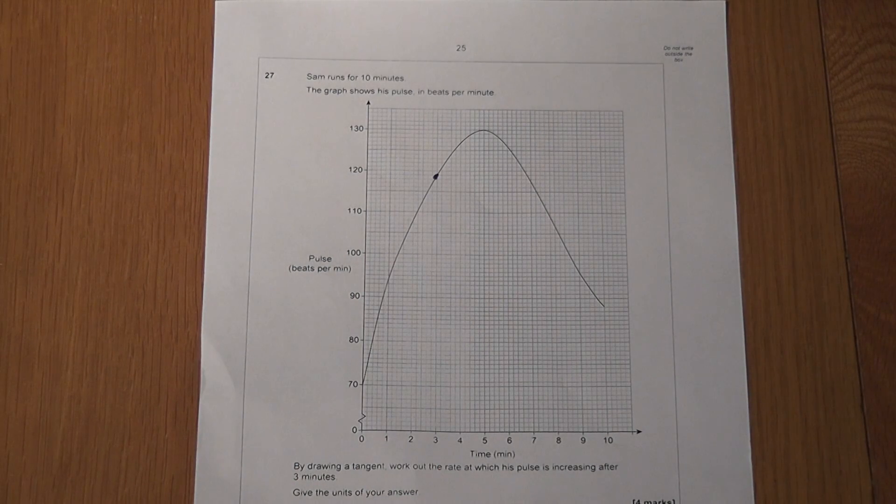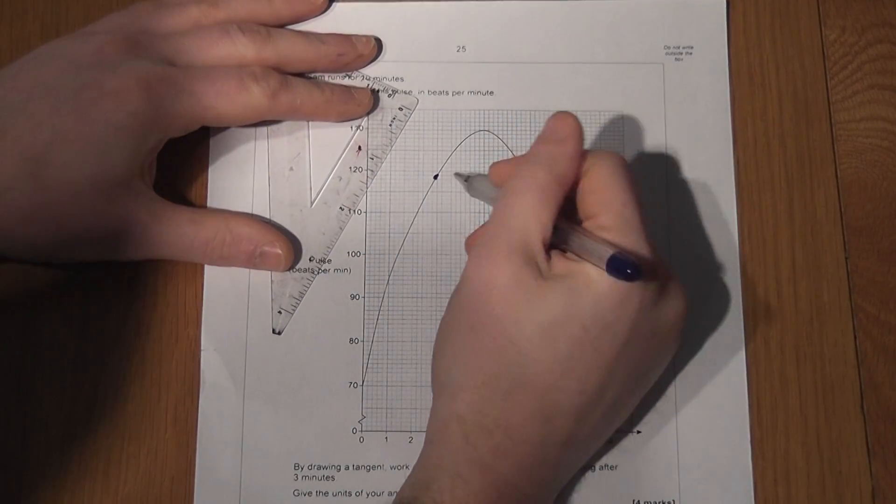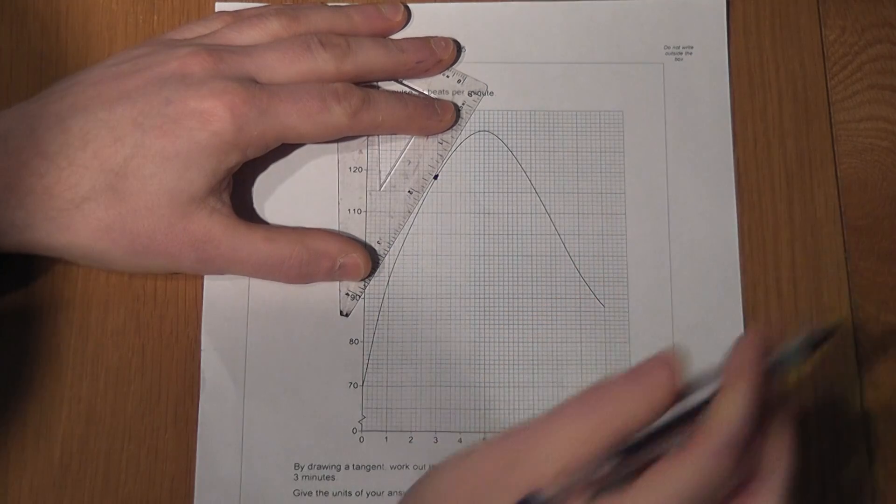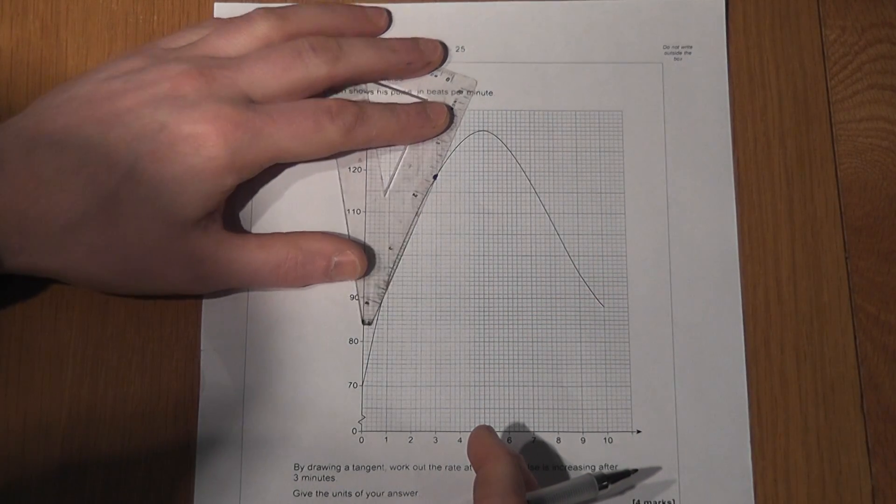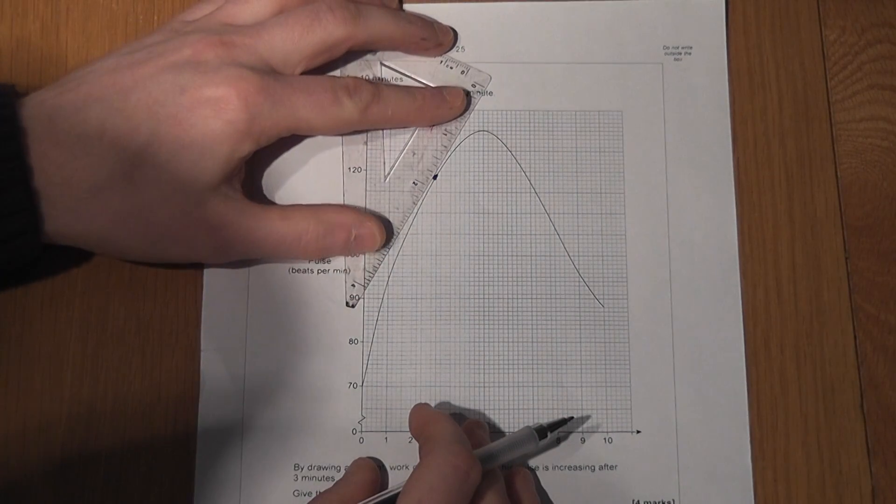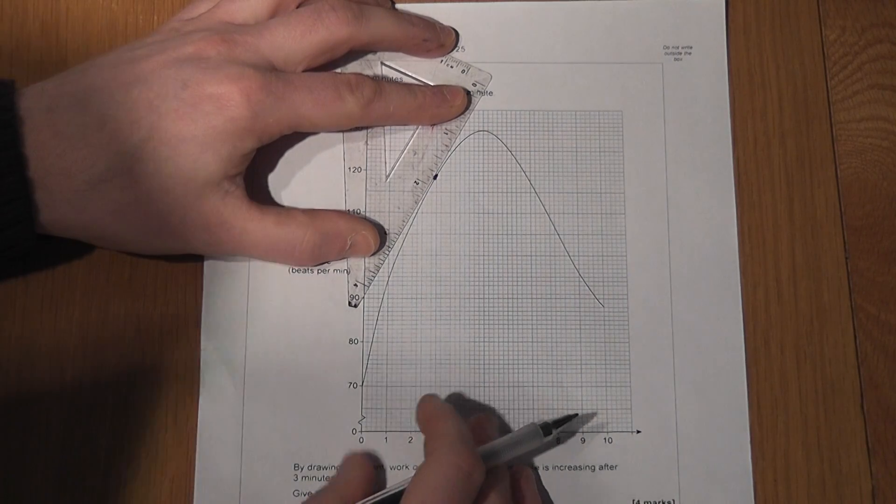Now to find the rate at which it is increasing, as the question says, we draw a tangent. What this means is we get a ruler, and at three minutes we try and draw a line which best resembles the curve, which just touches the curve. We don't go through. We make it best mirror what we believe to be the steepness at that exact point.